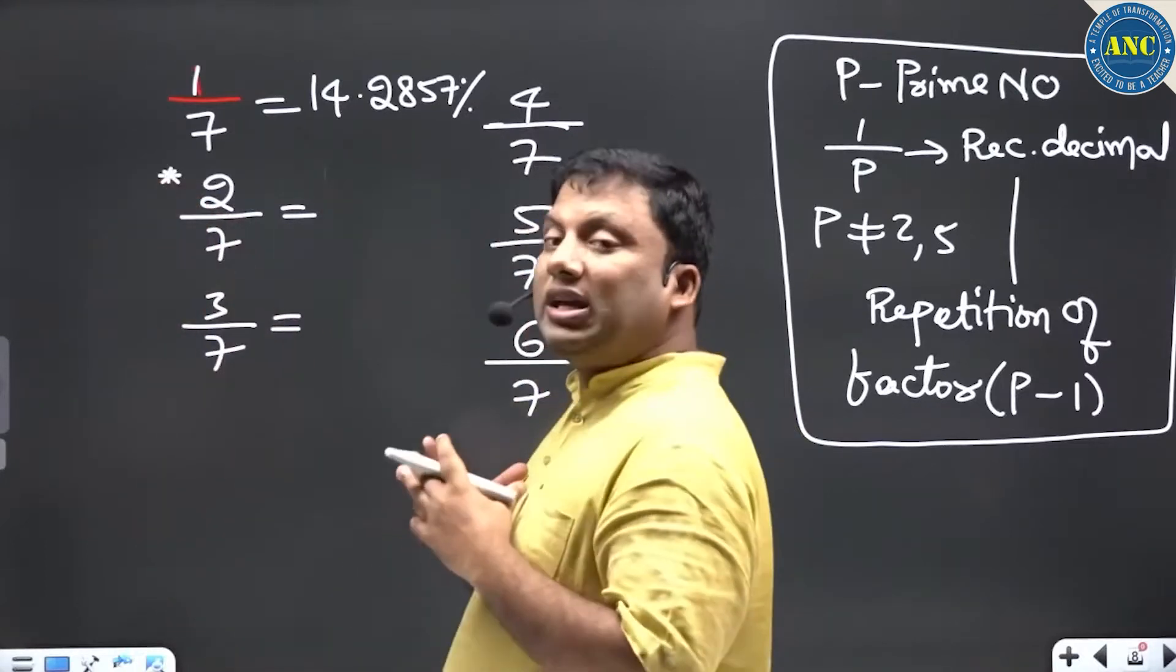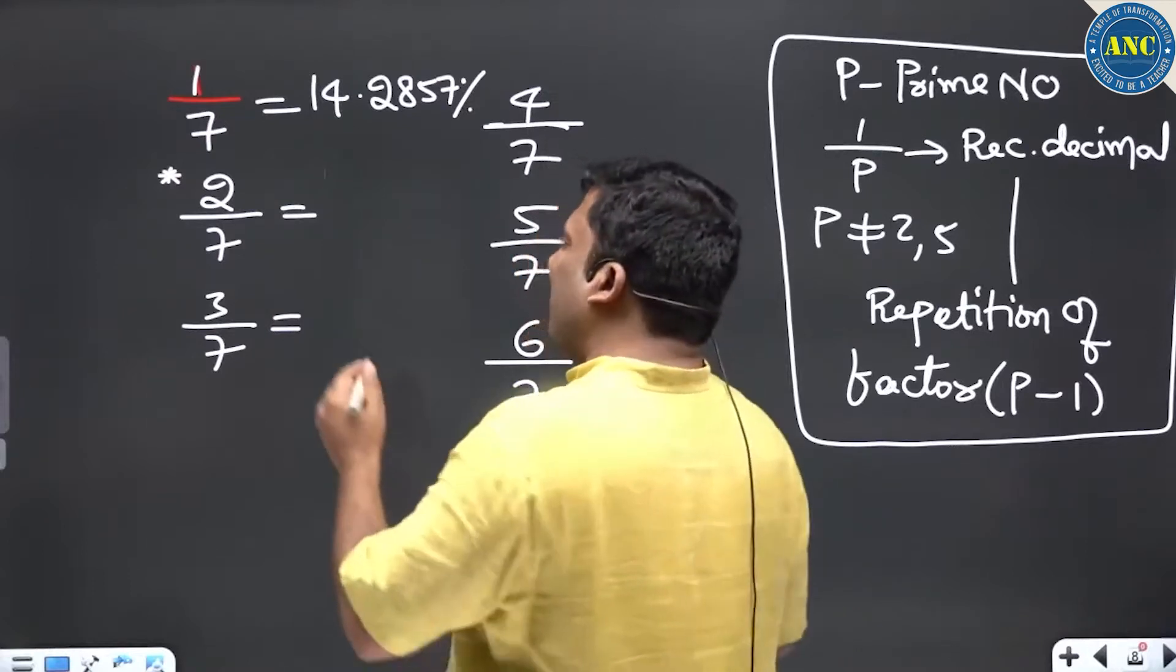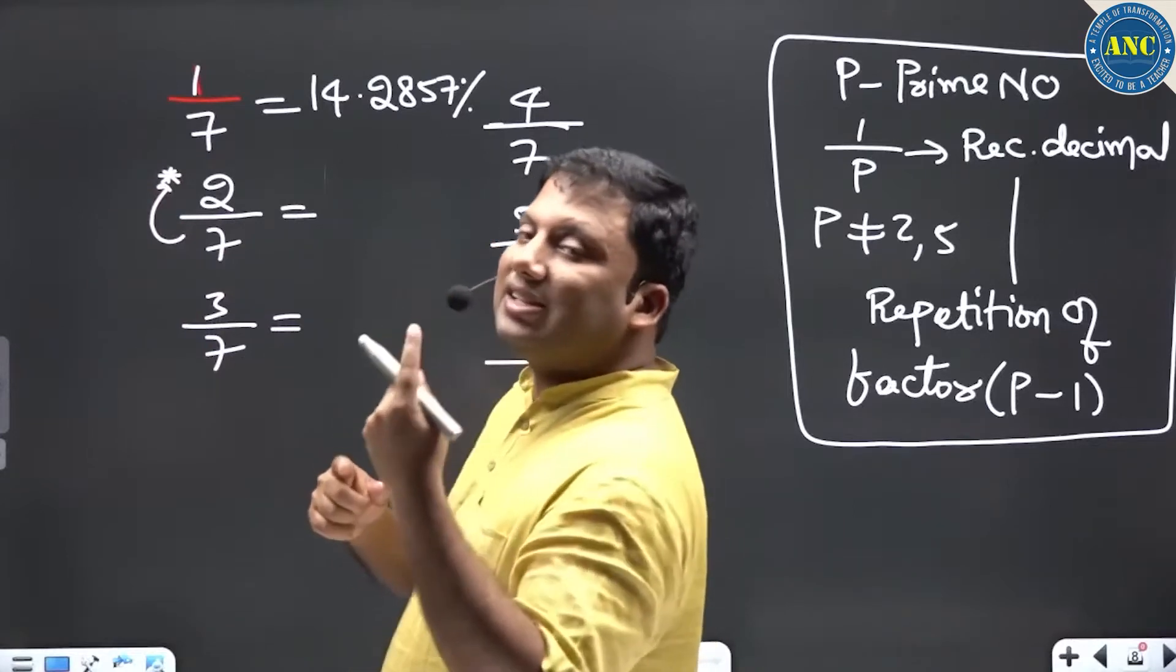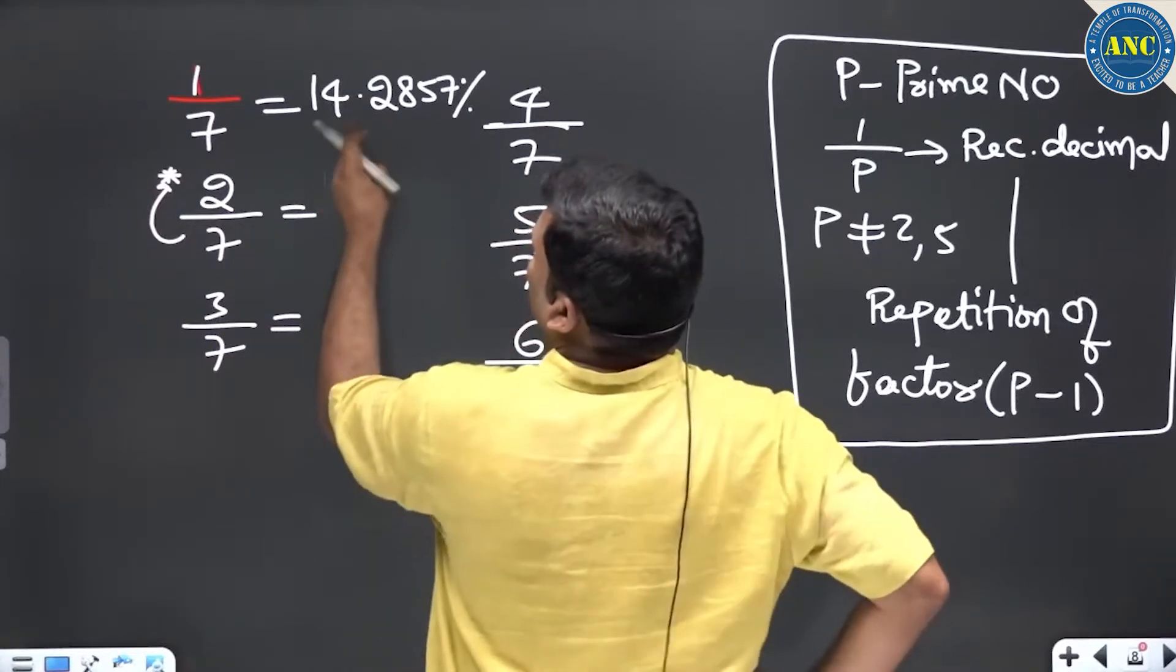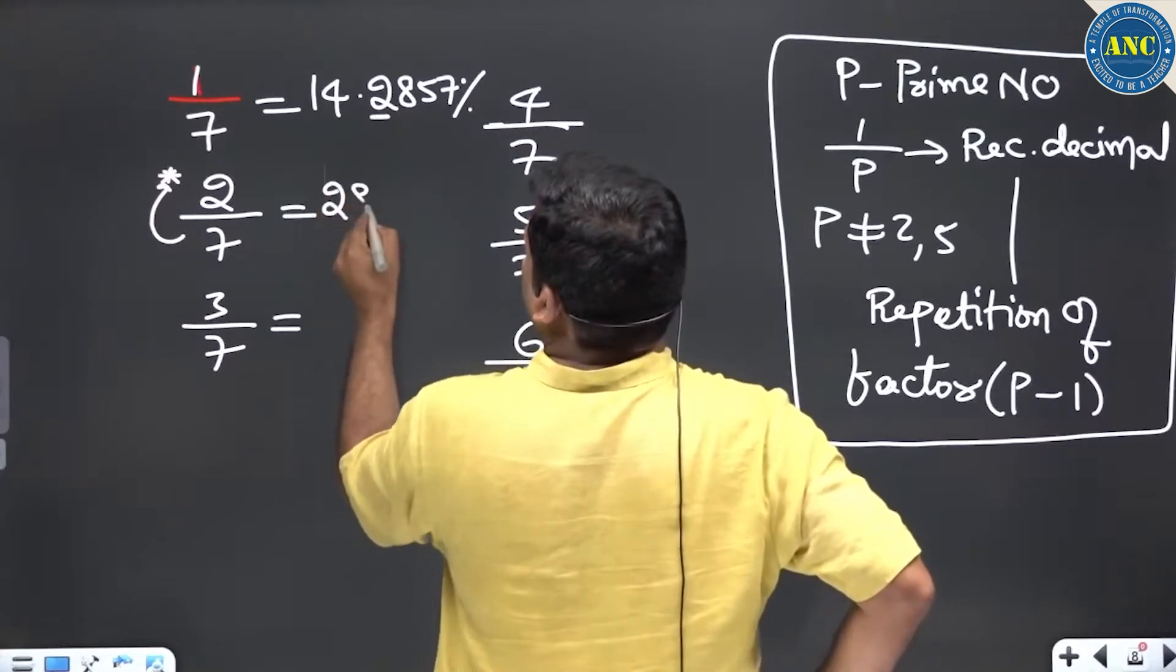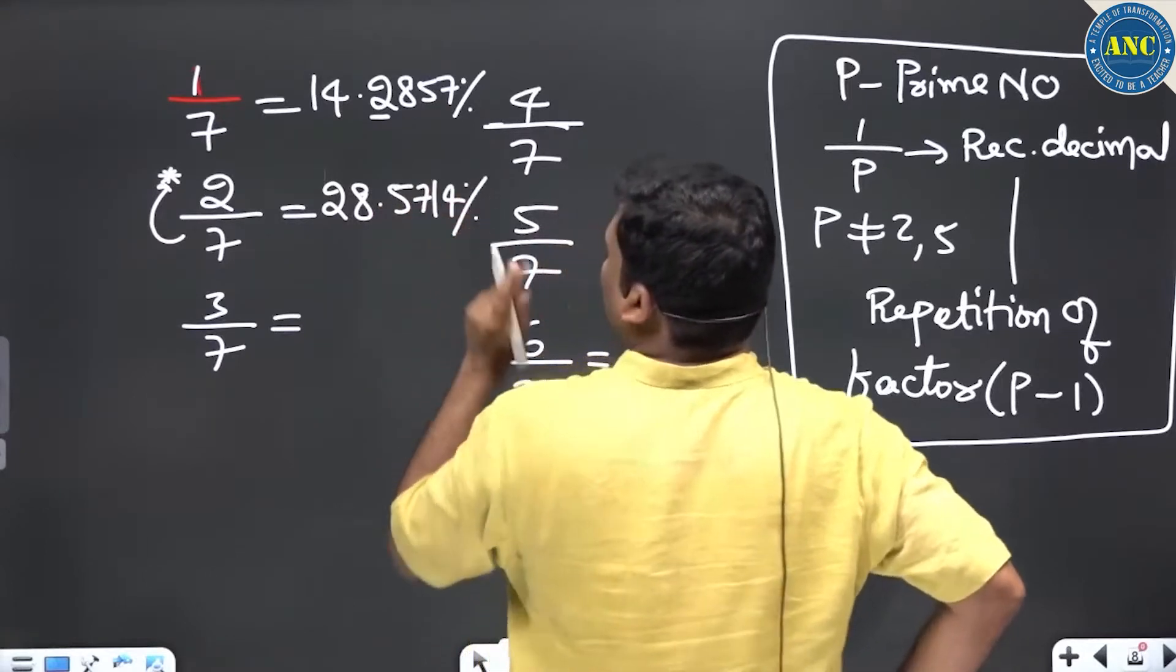Take the numerator 2, multiply it by 10. What is 2 tens? 20. 7 goes how many times in 20? 7 times. Write down this digit and the next digit, dot, remaining digits in serial order: 28.5714.